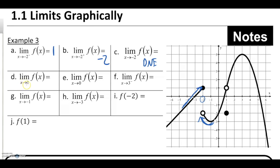Looking at the limit as x approaches 1 for f of x in part d — this is asking for a two-sided limit. From the left and from the right, it sure looks like no matter which side I come in from, I'm going to approach a y value of positive 1. Notice that's not where the point is, but remember — limits don't care about the point. It's behavior around the point. Part e, the limit as x approaches 0 for f of x — there's no drawn point there but we can read into it. Coming in from the left, coming from the right, both sides sure look like they would approach a negative 2.